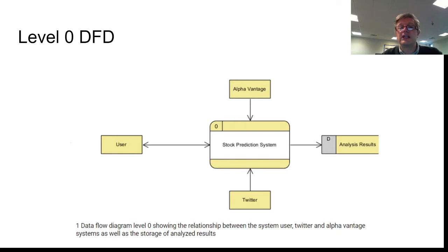Data is being collected from these three different areas into the system and then stored on a hard drive. That's all that this diagram is really telling us. It's the most basic DFD. It's also known as a context diagram because it just shows us how data is flowing through the system.